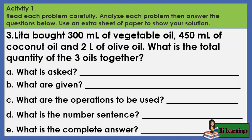3. Lita bought 300 milliliters of vegetable oil, 450 milliliters of coconut oil, and 2 liters of olive oil. What is the total quantity of the three oils together?